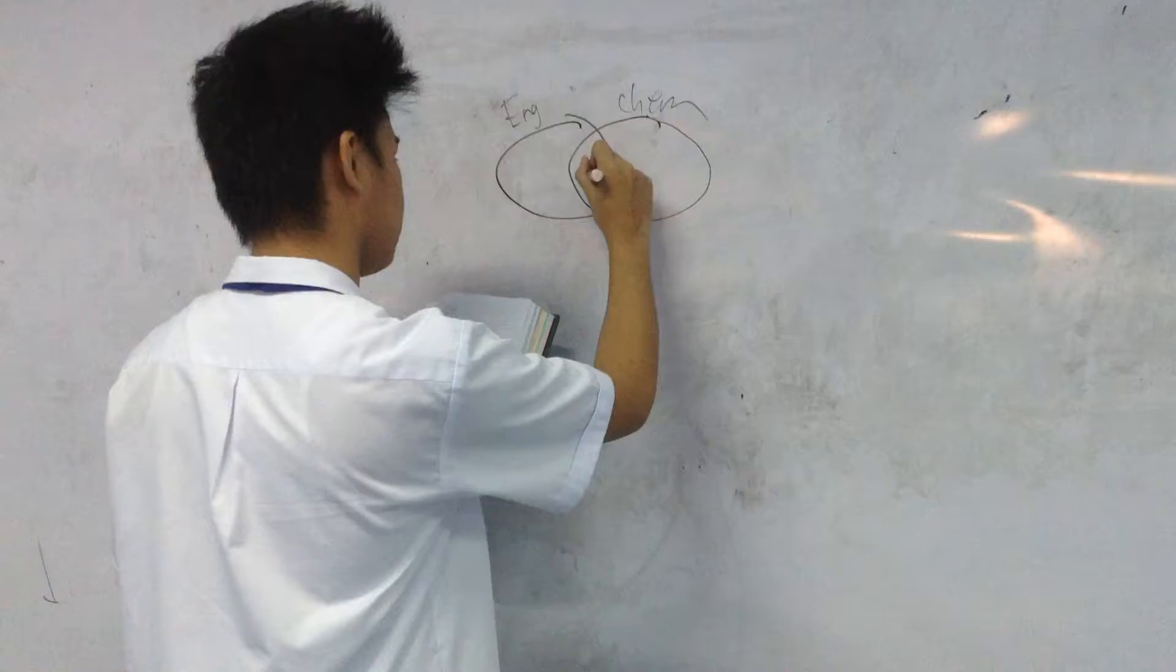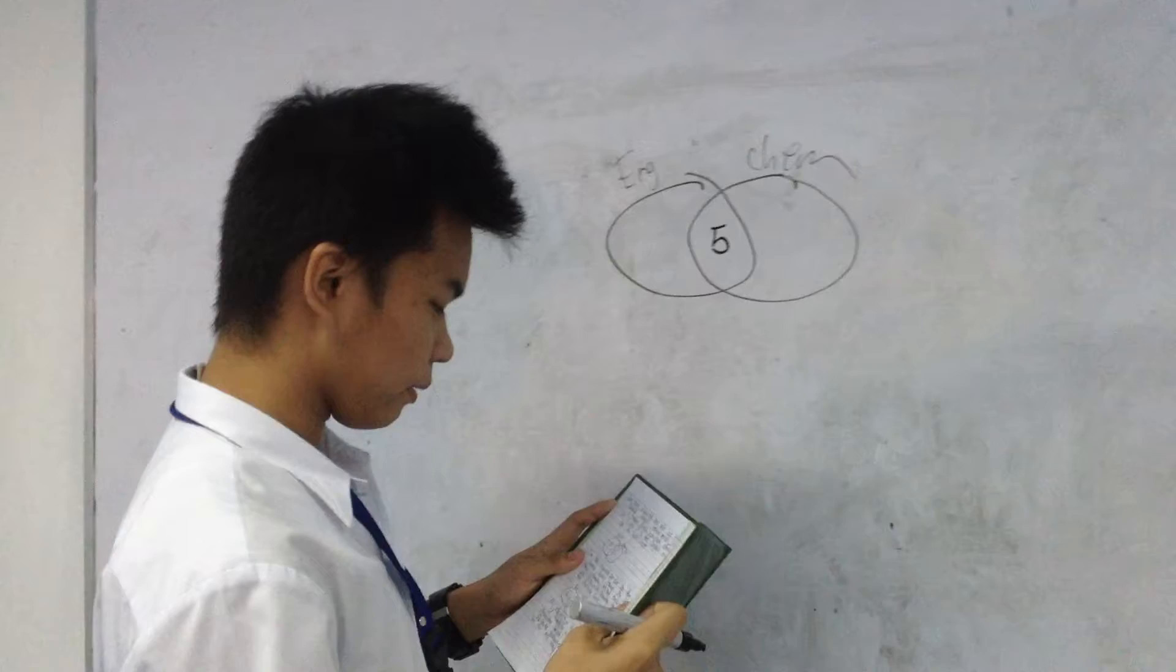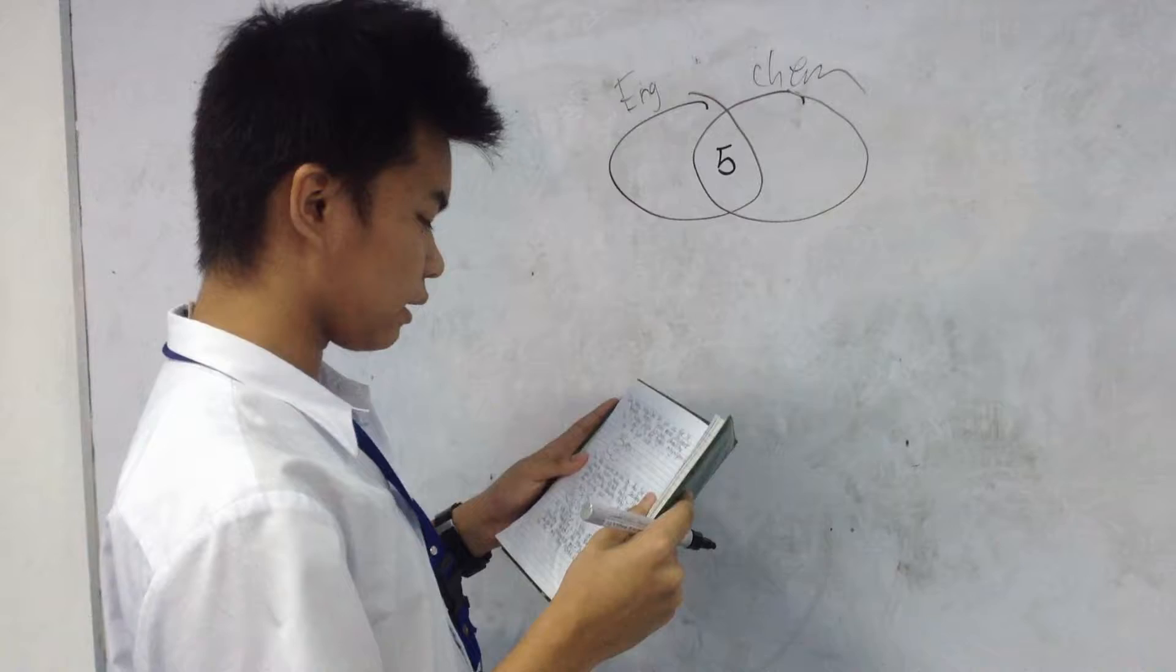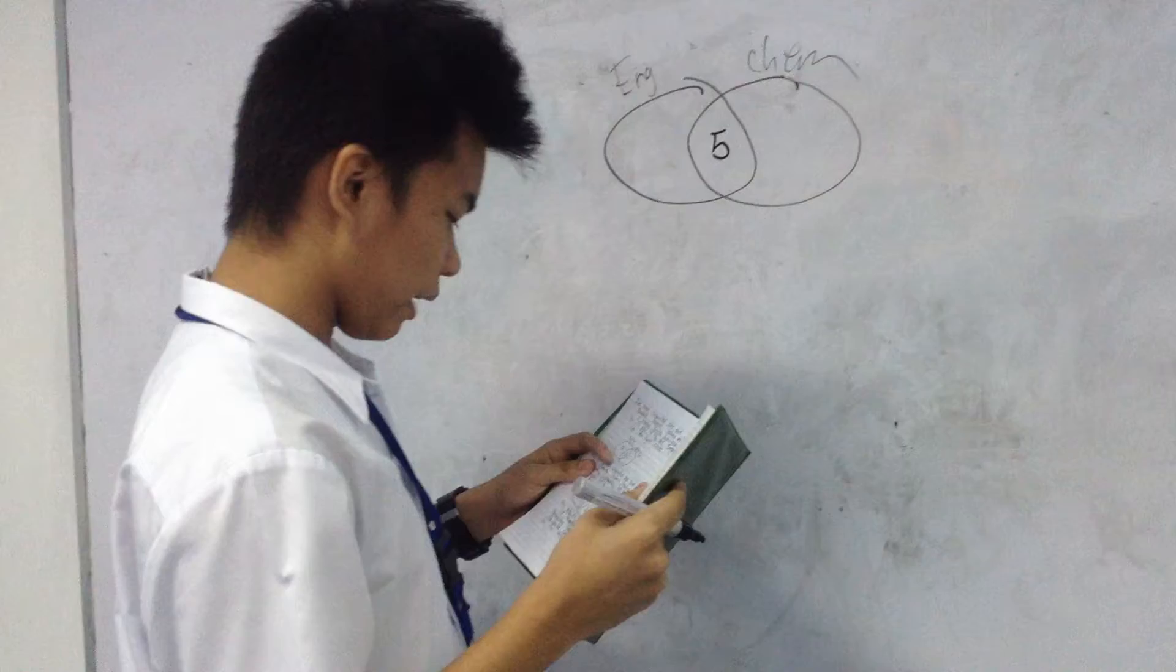I've now accounted for 5 of the English students, leaving 9 students taking English but not chemistry. So I put 9 in the English-only part of the English circle.